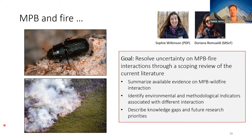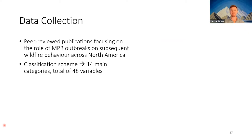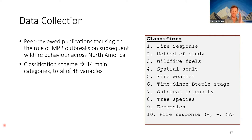They went through the peer-reviewed literature on mountain pine beetle and wildfire behavior in North America. A classification scheme was developed with 14 categories and a total of 48 variables. These classifiers were used to classify each publication addressing mountain pine beetle-fire interactions — including fire response type (severity, intensity, or ignition), method of study (simulation or empirical), whether fuels were considered, spatial scale, how fire weather was included, time since beetle stage, the intensity, the ecoregion, and finally whether the result was positive, negative, or neutral.